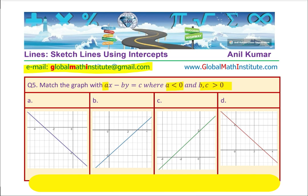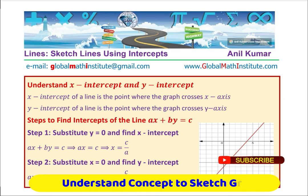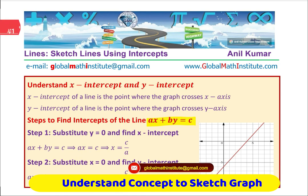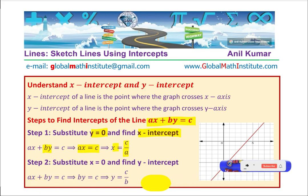Let's begin solving these questions. When the equation of a line is given as ax plus by equals c, to find the x-intercept you substitute y equals zero. With y equal to zero, the equation becomes ax equals c, so x equals c over a. We need to determine for different combinations of a, b, and c whether the intercepts are positive or negative.